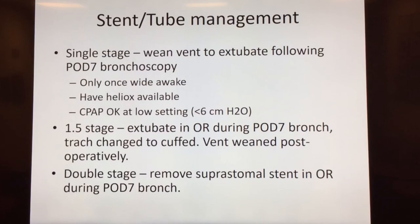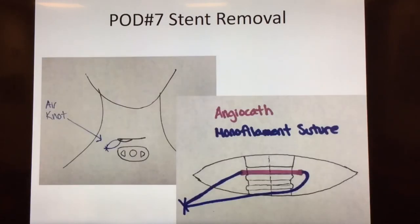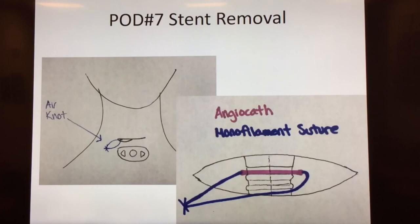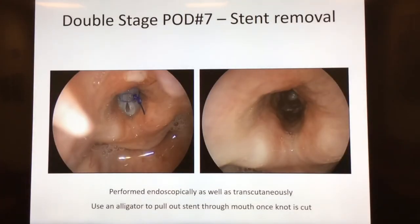For a double stage procedure, the goal is to remove the suprastomal stent in the operating room during the post-operative day seven bronch. These drawings show that the air knot for the monofilament suture will be on the right side of the incision. The goal is to cut the air knot through the incision — it will be passing through an angiocath situated in front of the trachea. When you cut the air knot, that releases the stent from being held in place. You can then take the stent out endoscopically through the mouth, using a large alligator to pull the stent out once the knot is cut in a transcutaneous fashion.